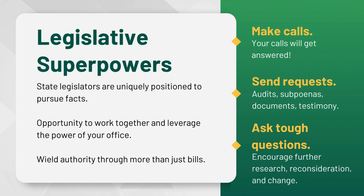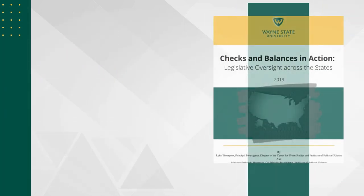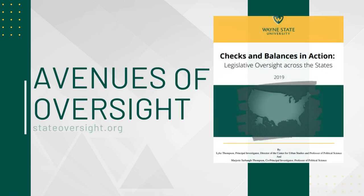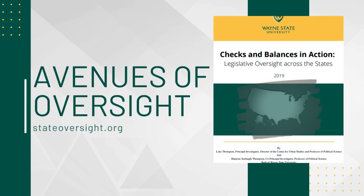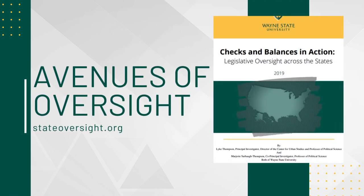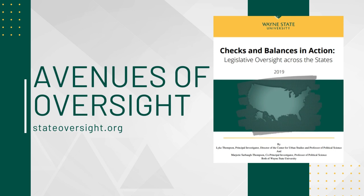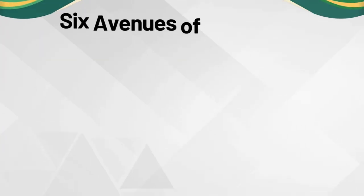How can you use oversight to have as much or more impact as legislation? Let's now turn to the six avenues of state legislative oversight. In 2018, the Levin Center commissioned a lengthy study of legislative oversight in the 50 states, which details each state's capacity to conduct oversight and its use of that capacity. The final report, which you can find on our website, focuses on six avenues, or dimensions, of oversight.